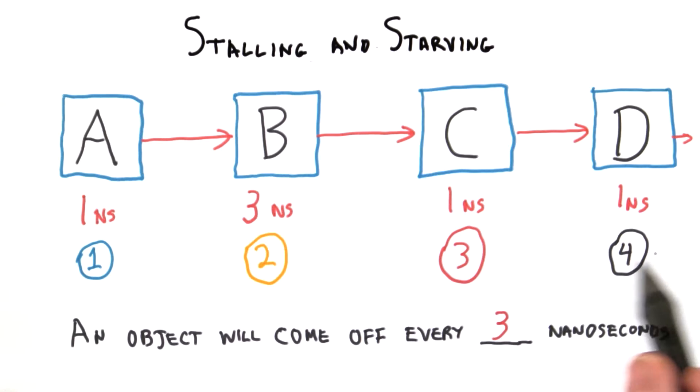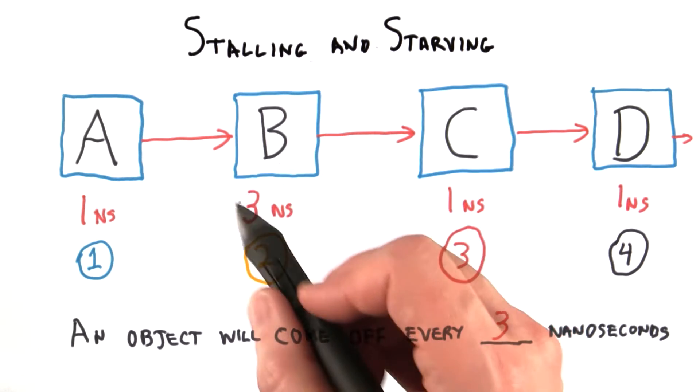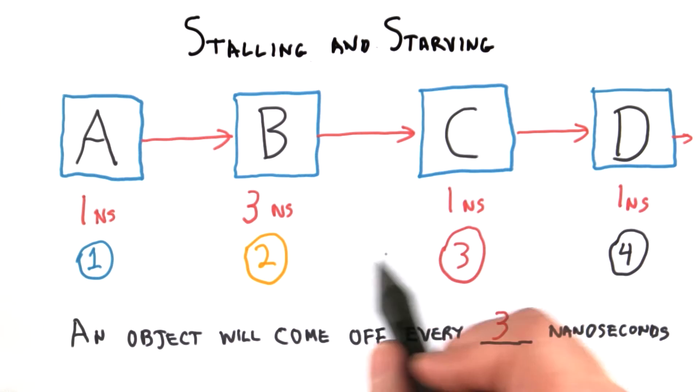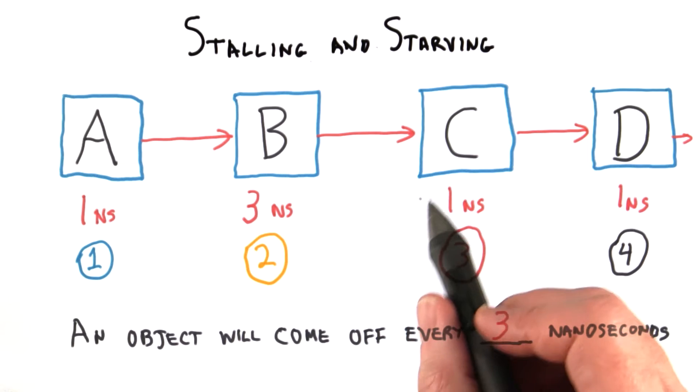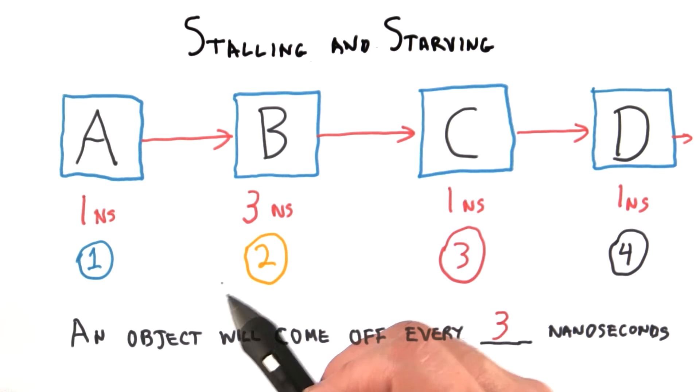Objects three and four move on through the pipeline, and object two is still being processed by B. What this is called is when stage C is waiting for input and nothing's coming because we're waiting for B to finish. That's called starvation. That's where C is not getting anything until B is totally complete.